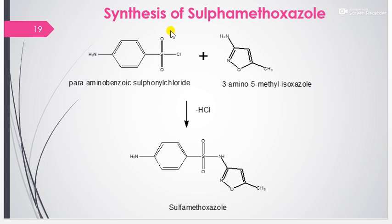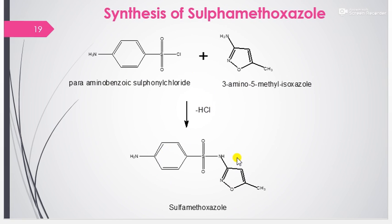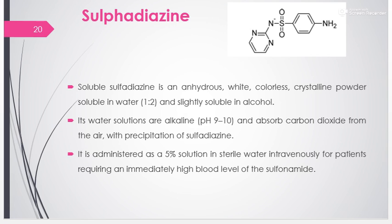The synthesis of sulfamethoxazole is a very simple reaction carried out in the presence of para-aminobenzenesulfonyl chloride and 3-amino-5-methylisoxazole. When the reaction is carried out between these two reagents, there is removal of HCl and the formation of sulfamethoxazole takes place.